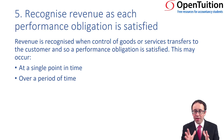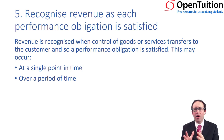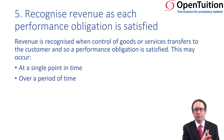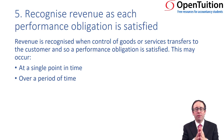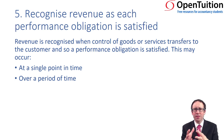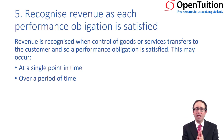What we need to do is look at the different performance obligations and determine whether that obligation is settled at a point in time or over a period of time. With our previous example of the entertainment system, the performance obligation for the system itself was taking place at a single point in time. When that good is sold, that's when control is transferred to the customer, so you recognise it at the point in time of the sale.